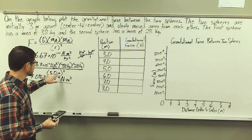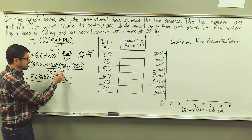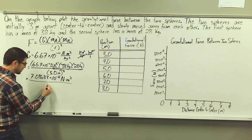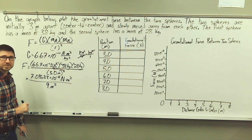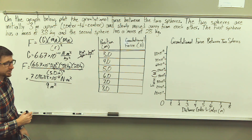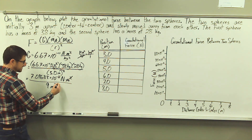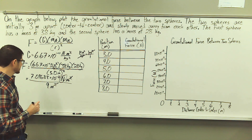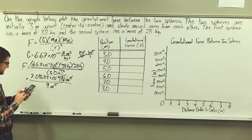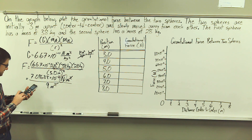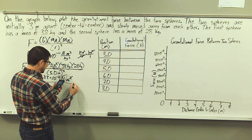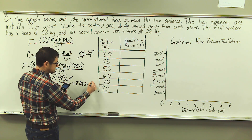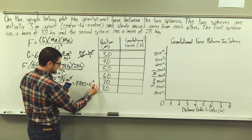In my denominator, we are going to square three meters. Not only are we squaring the numerical value, we are also squaring the unit value, so this gives me nine meters squared. The meters squared in the numerator and meters squared in the denominator cancel, leaving us with units of newtons. So we have this value that we divide by nine, giving us 7.885 times 10 to the negative ninth newtons.